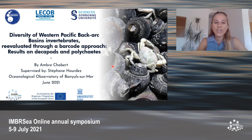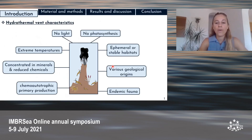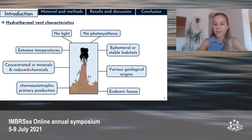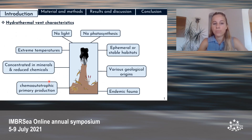Hydrothermal vents are home to endemic communities of highly specialized organisms. From these habitats, hot fluids laden in minerals exit the seafloor, precipitate, and form deposits whose accumulation forms chimneys. The fluid is also composed of reduced chemicals such as hydrogen sulfide or iron, and those chemicals are oxidized by bacteria to produce organic matter, forming the so-called chemotrophic primary production.